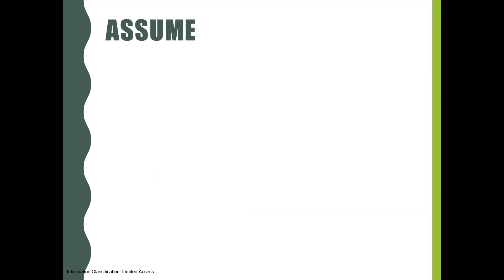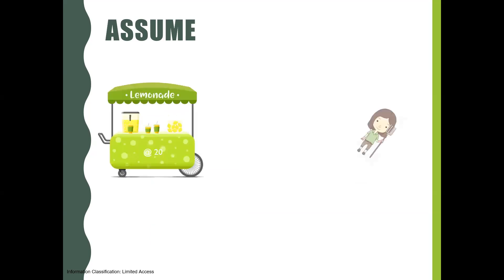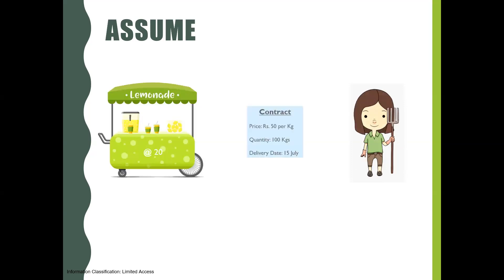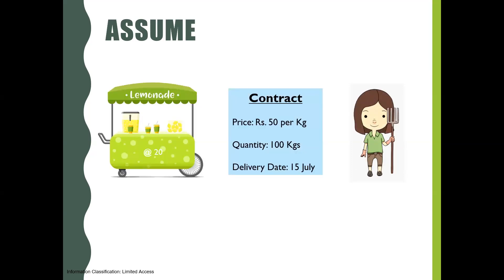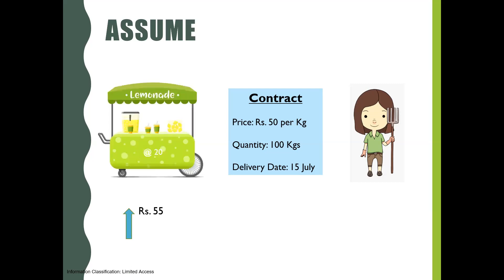Since both of them are worried about the adverse movement of the price, they decide to get into a forward contract, where they fix the contract price as 50 rupees per kg, quantity of 100 kgs, and delivery on July 15th. If the price rises to 55 rupees, the lemonade vendor would gain 5 rupees per kg. On the other hand, if the price falls to 45 rupees, the lemon farmer would gain 5 rupees per kg.